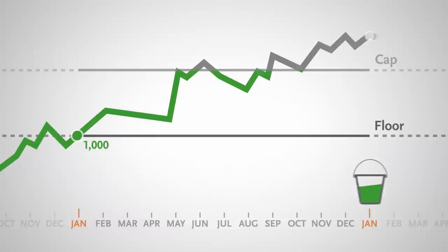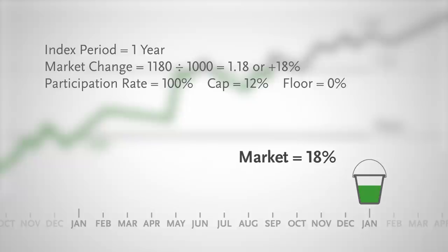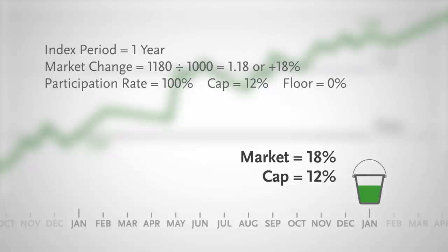When the change is positive, your policy is credited interest after applying any caps and participation rates. Here, the market has a positive change of 18%. After caps and participation rates, the policy realizes the potential of the market index up to the cap of 12%.